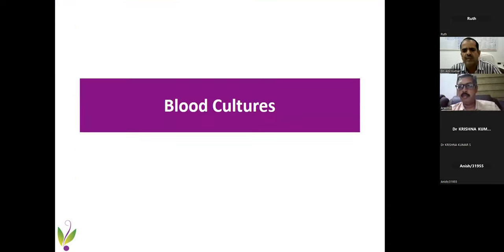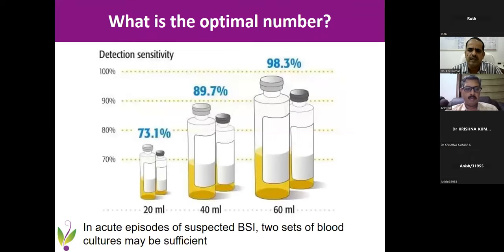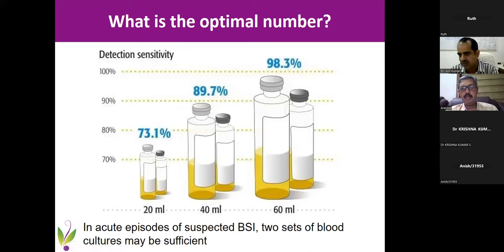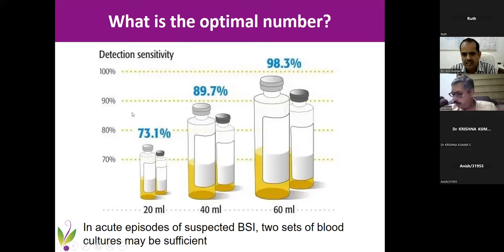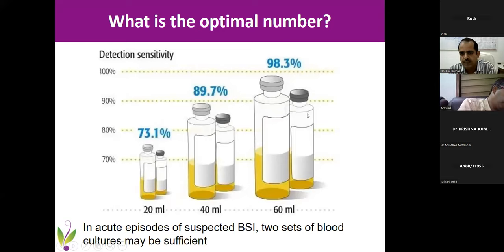Let's begin with blood cultures — the most common and most underutilized thing in microbiological practice. The first question is how many blood cultures to send. Guidelines say three sets, each set having two bottles — aerobic or aerobic-anaerobic — totaling about 60 ml of blood. Nobody sends three sets in practice. If you send one set, sensitivity is 73%. Two sets is 89%. Adding two more bottles gives 98%. So technically there is only an 8-9% difference between two and three sets. In an acute case, two sets is good enough.